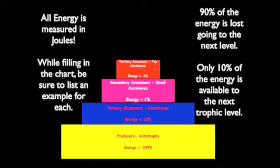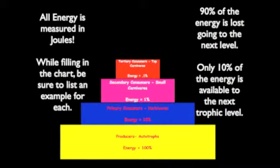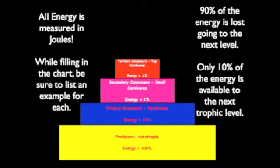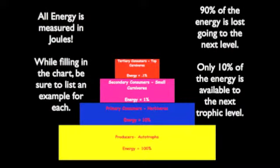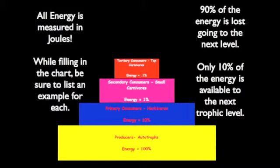The pink box is your secondary consumers — this will be your small carnivores. Notice that the energy has dropped from 10% to 1%. The final box is going to be your tertiary consumers, which are your top carnivores — something that could eat us, like a shark. A shark is going to be your tertiary consumer. Notice that they're only receiving 0.1% of the energy — again, it has dropped 90%.